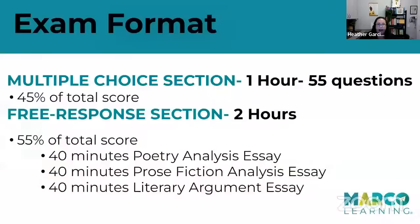I'm so certain you know this testing format by now, but just in case — one hour, 55 questions for the multiple choice section, about five-ish passages, 45% of your total score. That could be poetry, excerpts from drama, novels, or short stories. They'll be relatively short — 10, 12, 15 questions each. Give yourself about a minute per question, and that includes the reading. If there are 15 questions for the first passage, give yourself 15 minutes. It's a quick test.